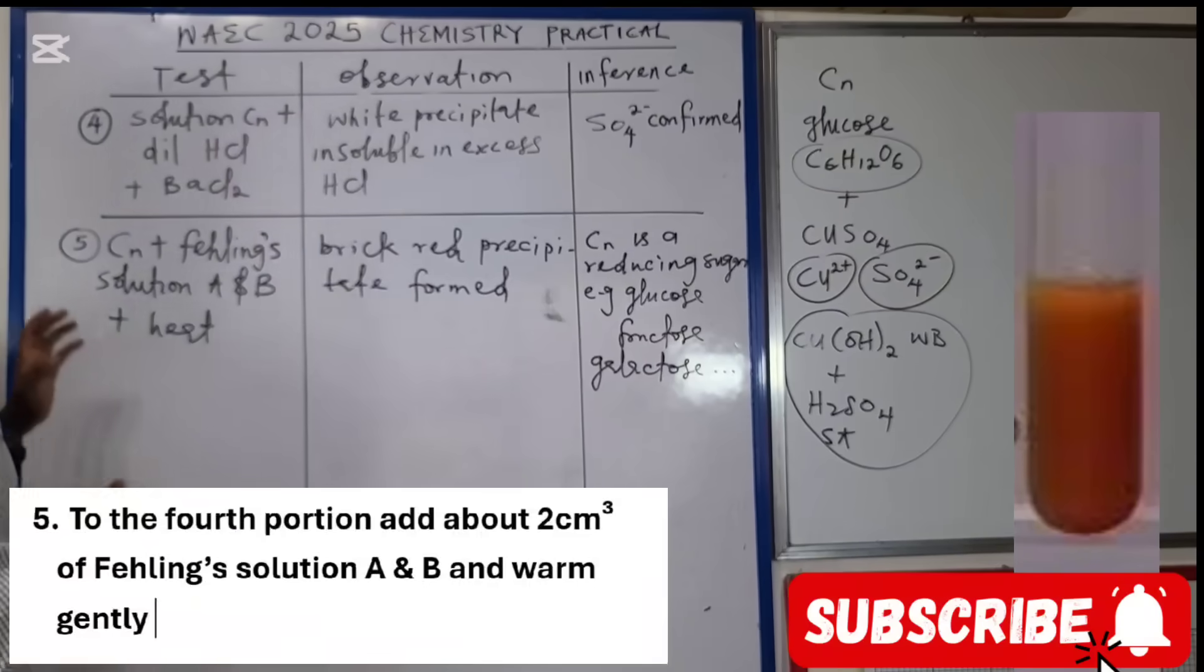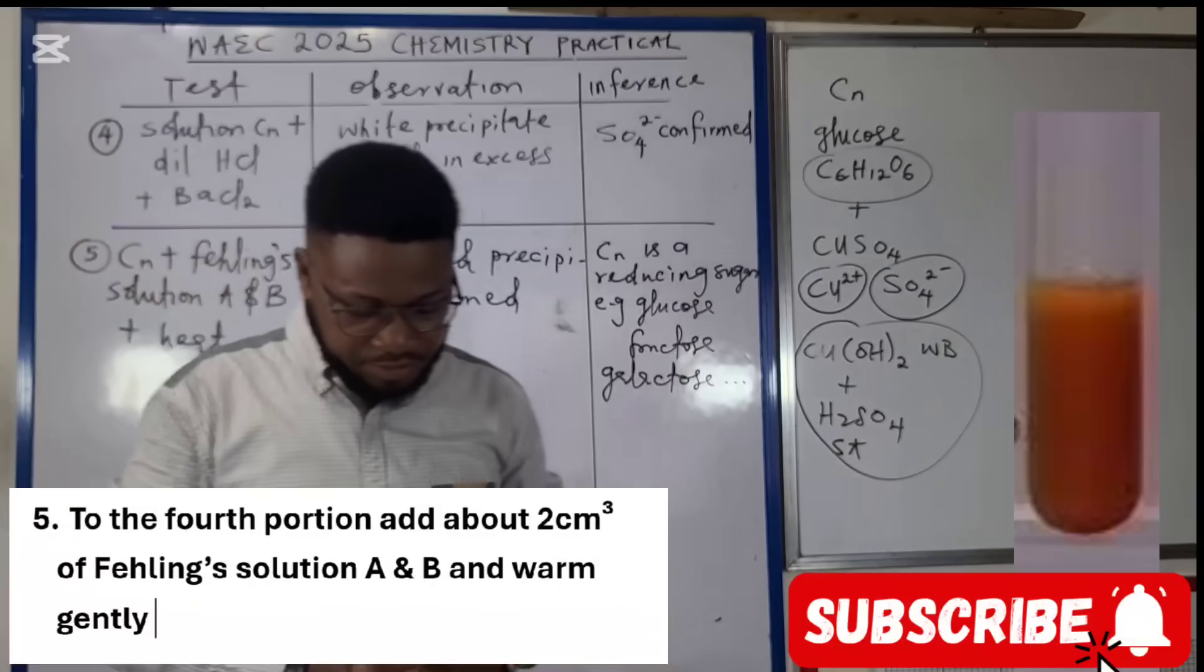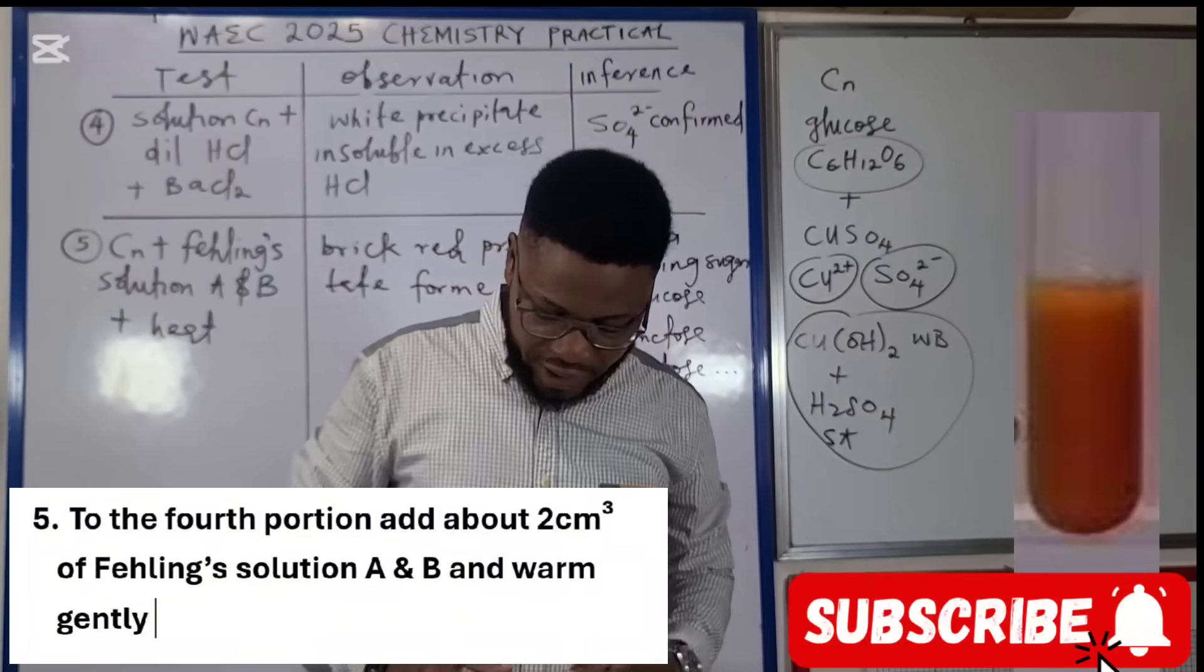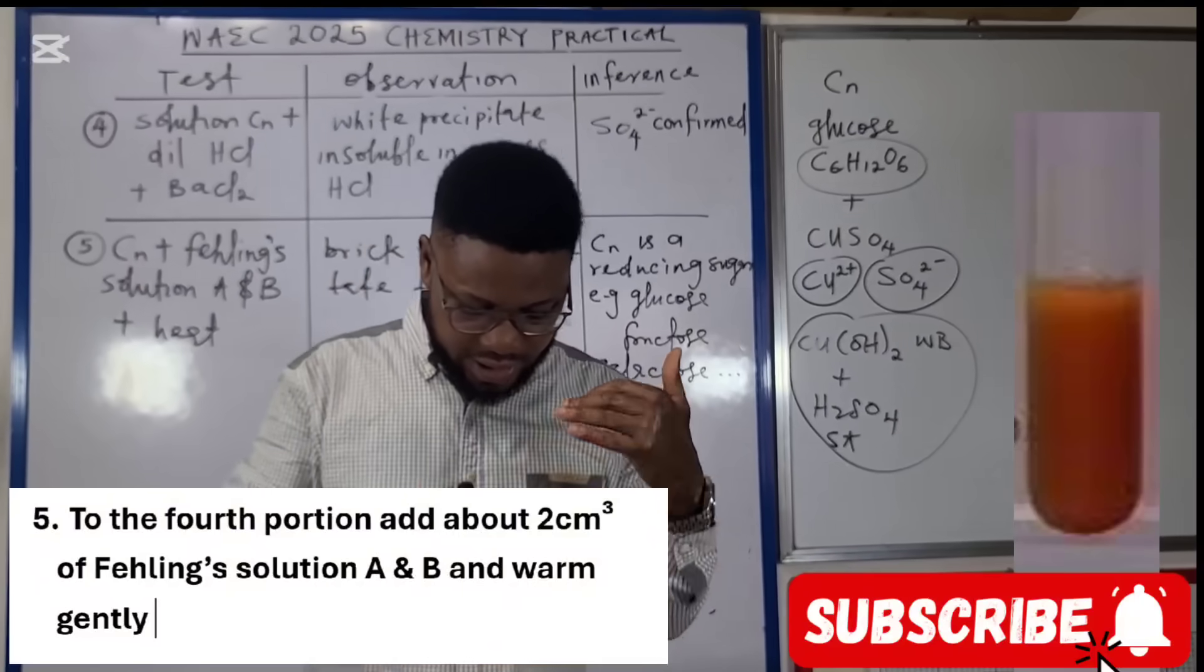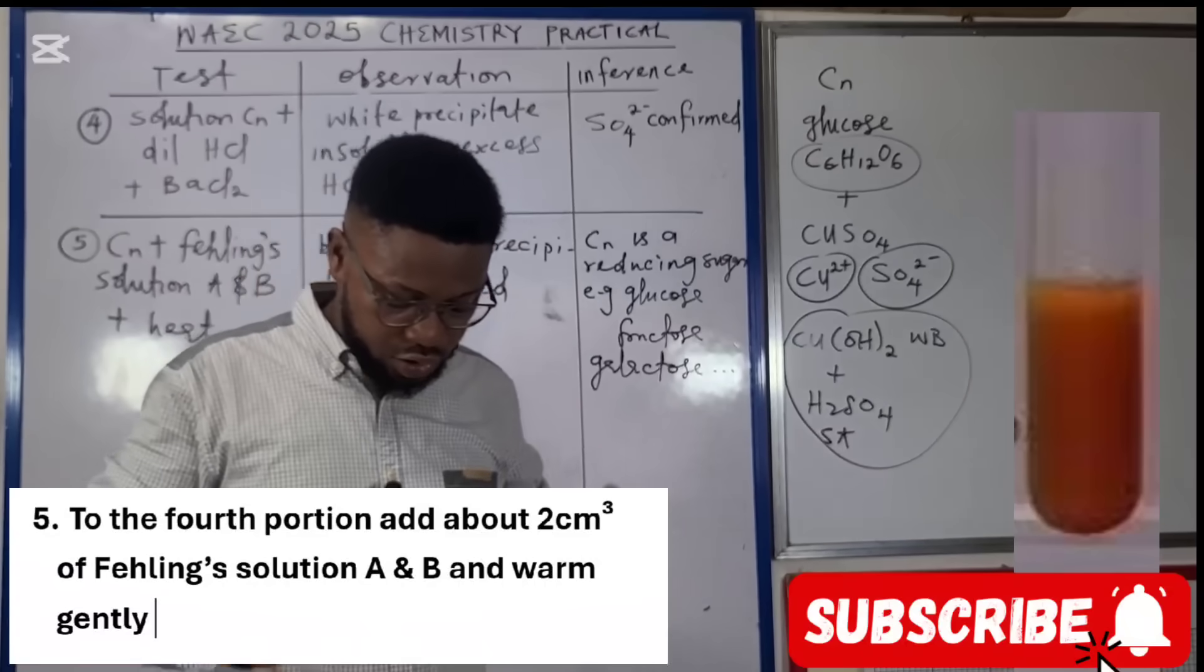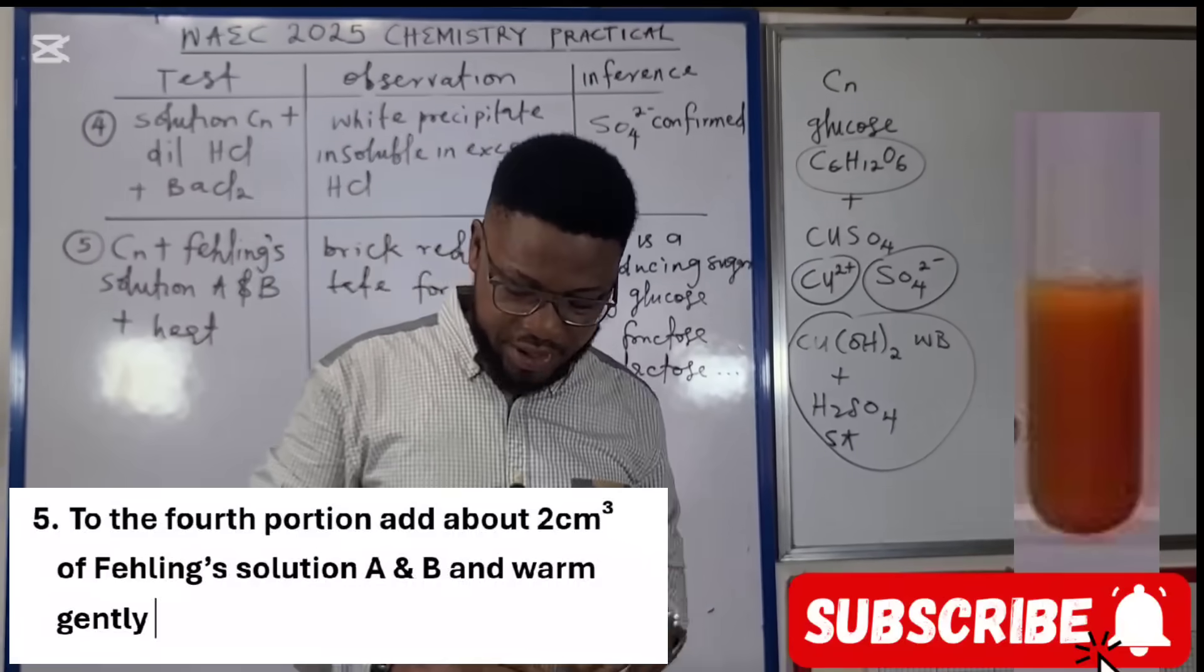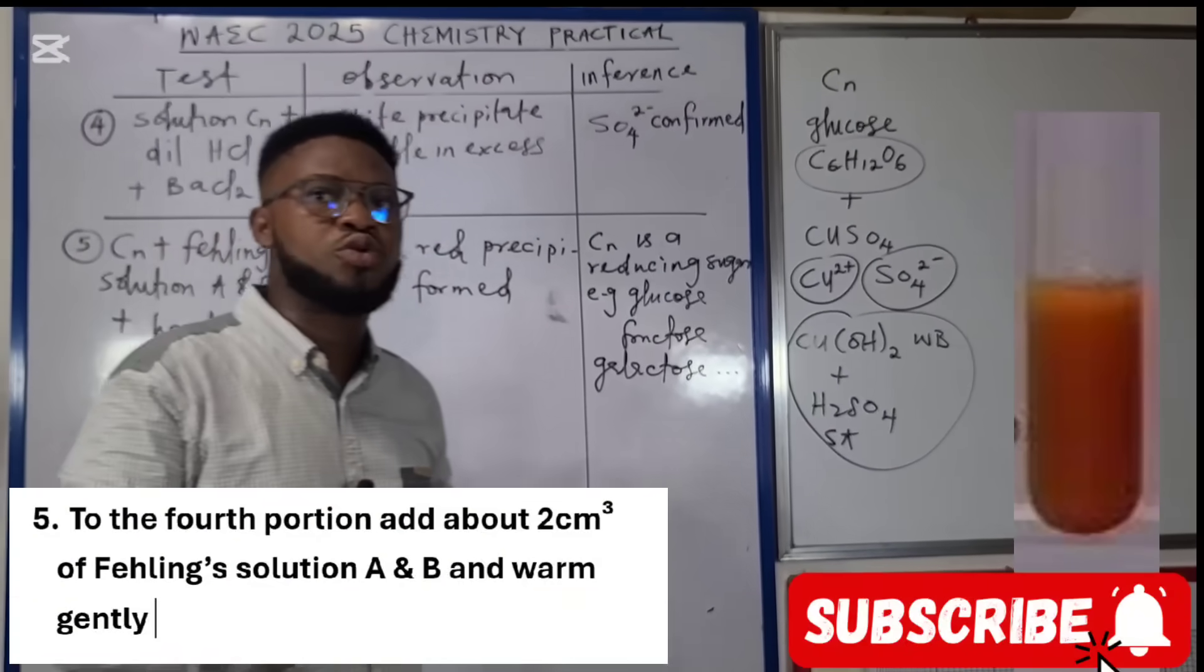Now to question 5. It says to the fourth portion add 2 cm³ of Fehling's solution A and B and warm gently. You can see in the reagents we're told to provide, it says Fehling's solution A and B. When you talk of Fehling's solution, you know that is to test for the presence of monosaccharides or reducing sugar.